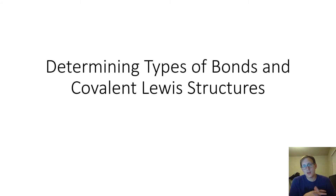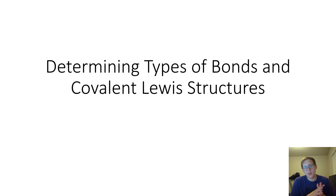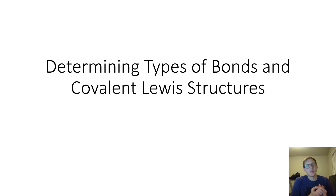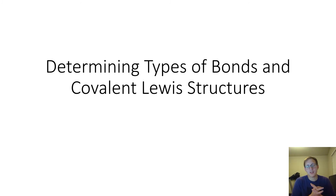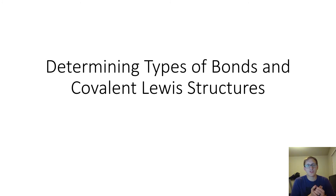Hi, physical science students. We're back for another video talking about chemical bonds. Today we're going to be talking about how you determine which type of bonds are in certain compounds. And then after that, we're going to do some practice on drawing covalent Lewis dot structures. It does get a little bit more complex than just doing single atom Lewis dot structures.